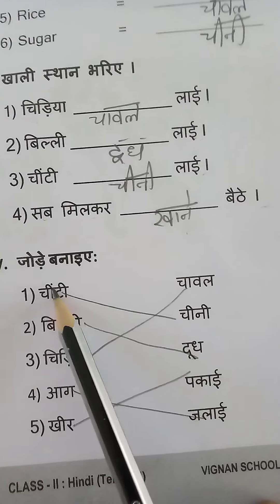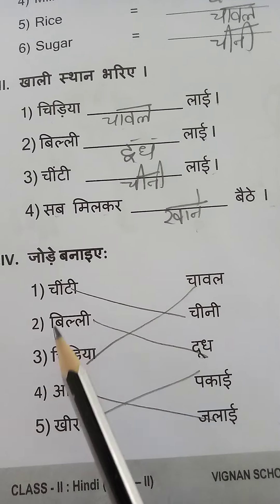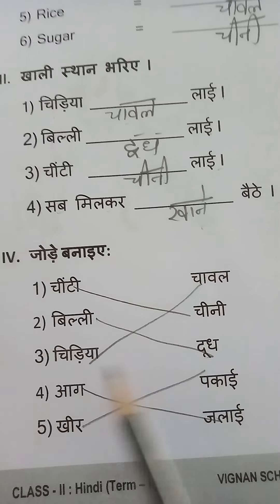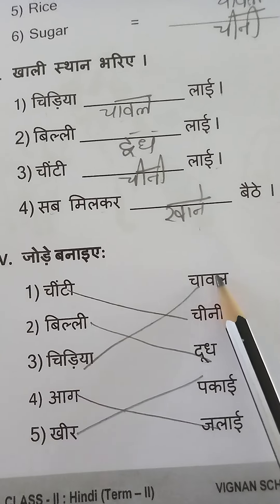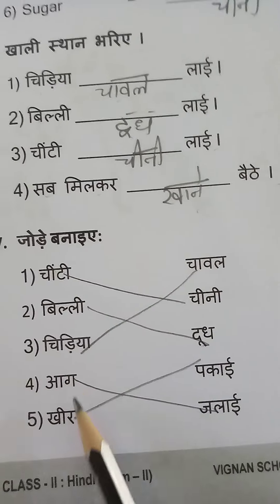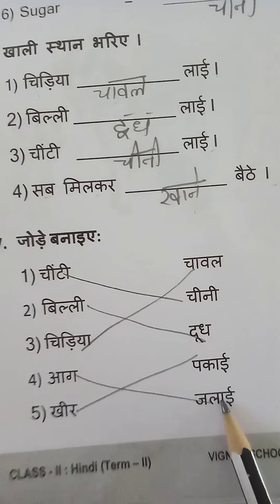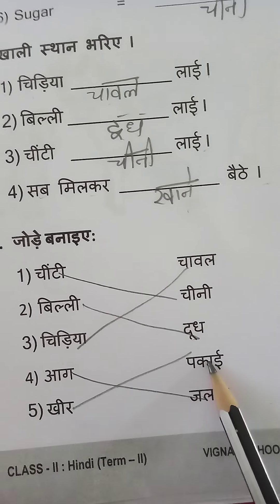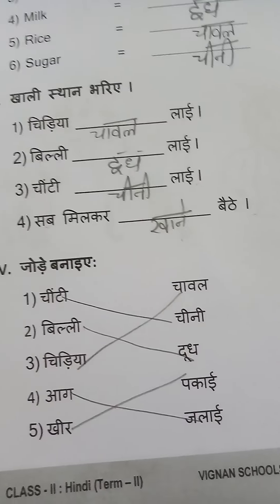Matching: Chinti — chini. Bili — dood. Chidia — chaval. Aag jalaayi. Kheer pakai. Okay na children.